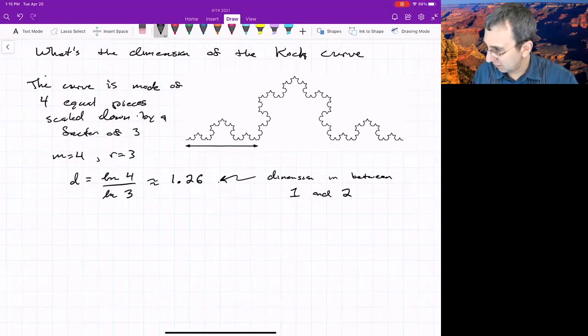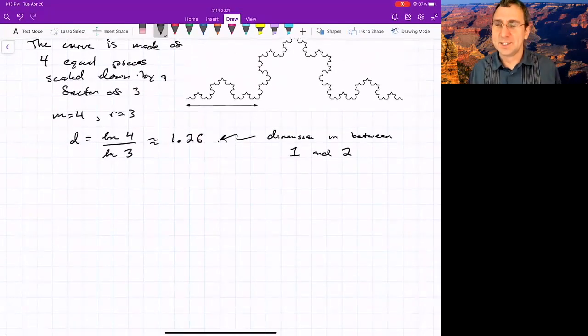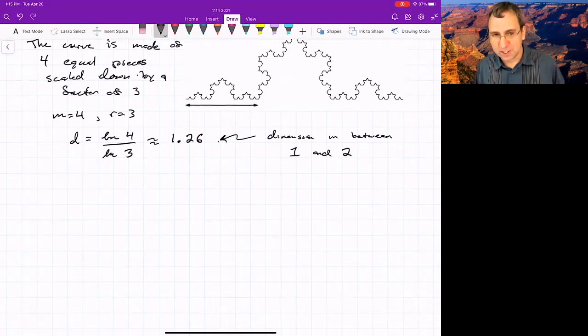There's other ways to measure dimension other than these that lend themselves to computations for any kind of thing. So one example that has been brought up is, you know, what is the length of the coastline of Britain?